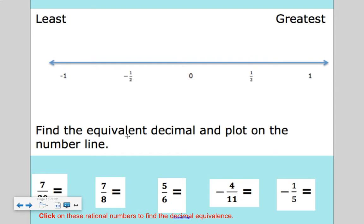Rational numbers are any numbers that can be written as a fraction form, such as a whole number, an integer. So let's look at our first example. We have find the equivalent decimal and plot on the number line.